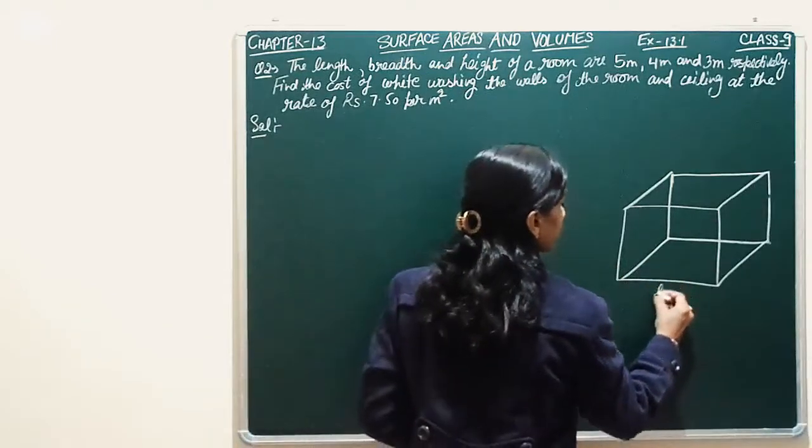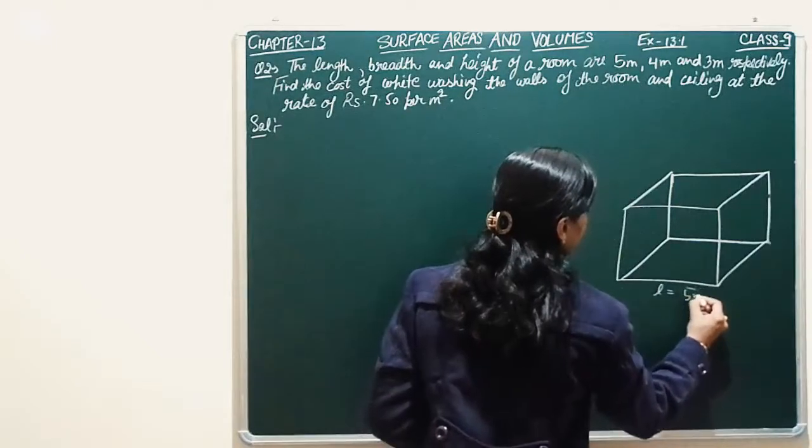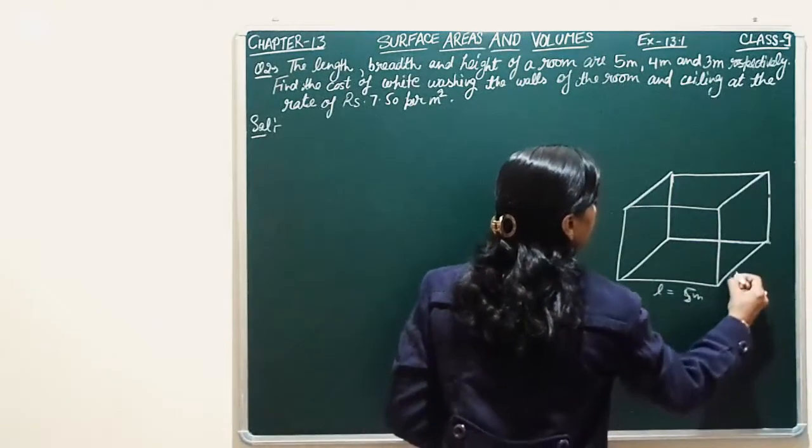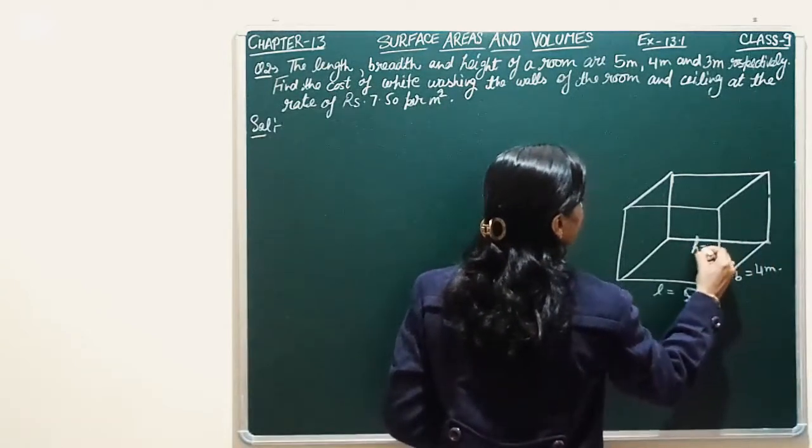So for the cuboid, here we have L's value 5 meter, B's value 4 meter, and H's value 3 meters.